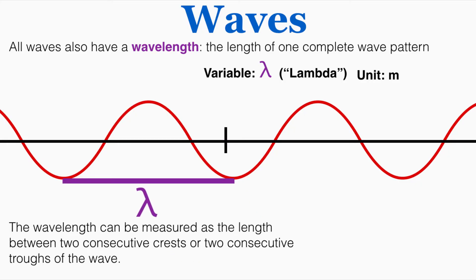The wavelength can be measured as the length between two consecutive crests or two consecutive troughs of a wave. You'll notice that here by measuring between two consecutive troughs I can also find the exact wavelength of the wave. That's the same length as what I measured before and it's the same up here if I measure between two crests of the wave.